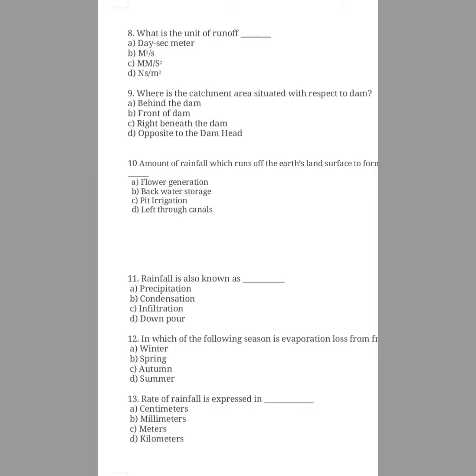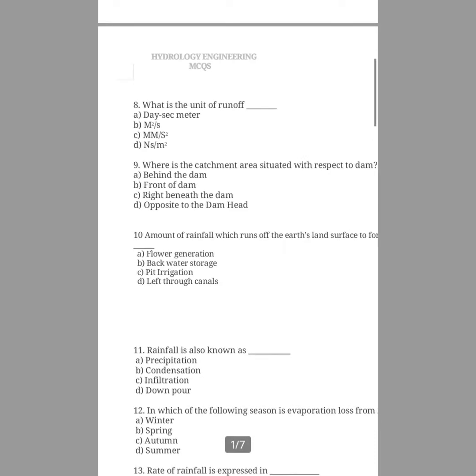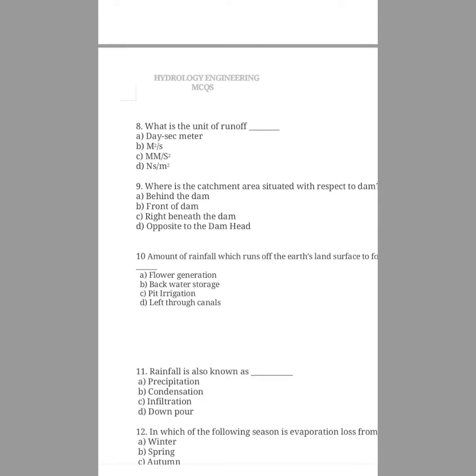Question number nine: where is the catchment area situated with respect to a dam? The answer is behind the dam. In the catchment area, the total area is located behind the dam on the hydro side. The draining water flows to the reservoir, and the place is usually steep at this point. The dam head acts as the outlet point, letting out water after utilizing it for power production.